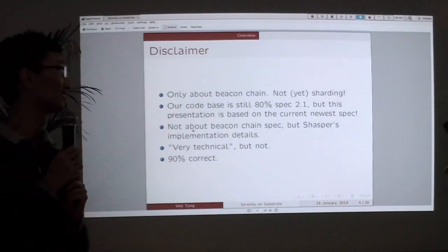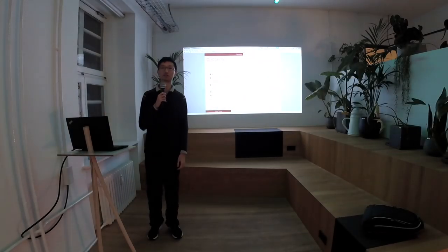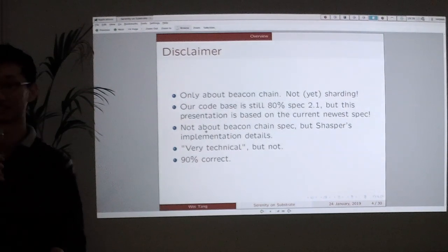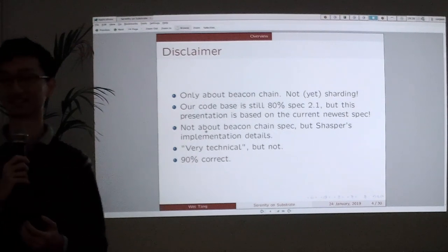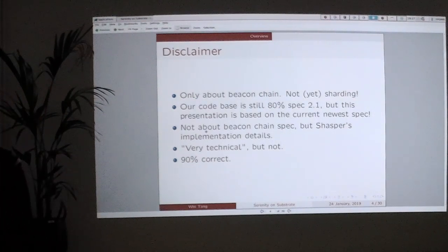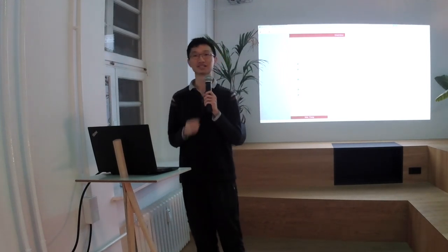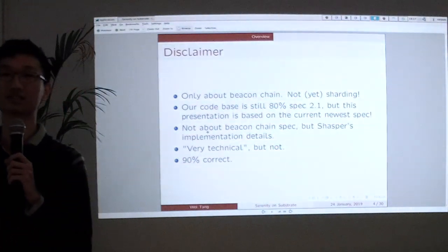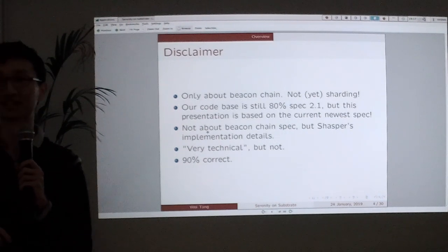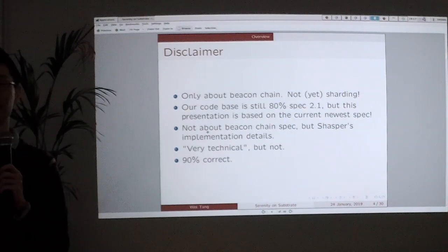Some disclaimers: this talk is only about the beacon chain, because Ethereum 2.0 is a large project and there will be many phases to be carried out. The first phase is phase 0, and we will get a beacon chain hopefully soon enough. In phase 0 there will currently be no sharding. Also, our codebase was actually quite old — it was written when the 2.1 specification of the beacon chain came out, and we still have some parts of it in our runtime. Our code is still about 60 to 80% spec 2.0, but this talk will be based on the newest current spec.